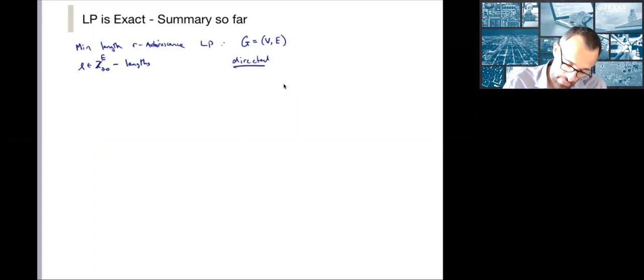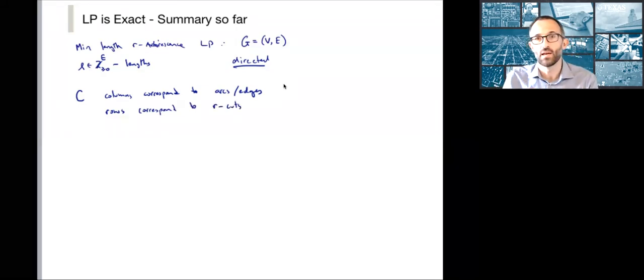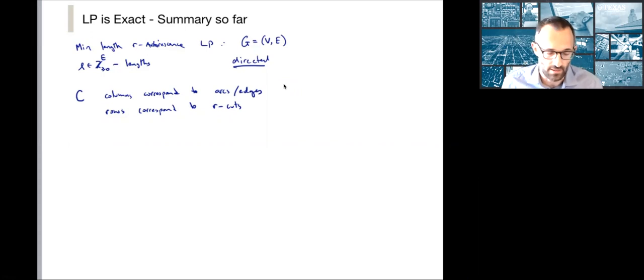We define a matrix C that has exponentially many rows. So C is a matrix whose columns correspond to arcs or edges. The rows, exponentially many of them, correspond to R-cuts. In other words, any subset of V excluding the special node R, which is called the root node, and defines the R-arborescence problem.